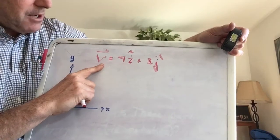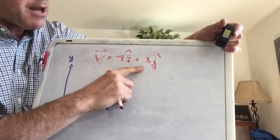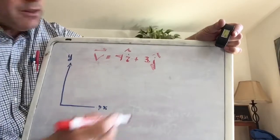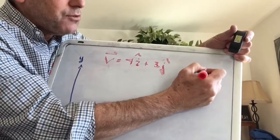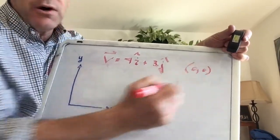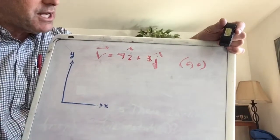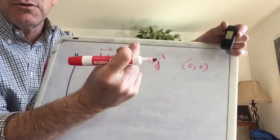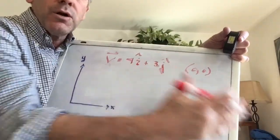Here are your marching orders. Copy down this velocity vector: V equals 4i-hat plus 3j-hat. The first thing I want you to do is figure out the streamline through the point (0, 0). That's going to be on the test. Why don't you pause the video and figure out the streamline.